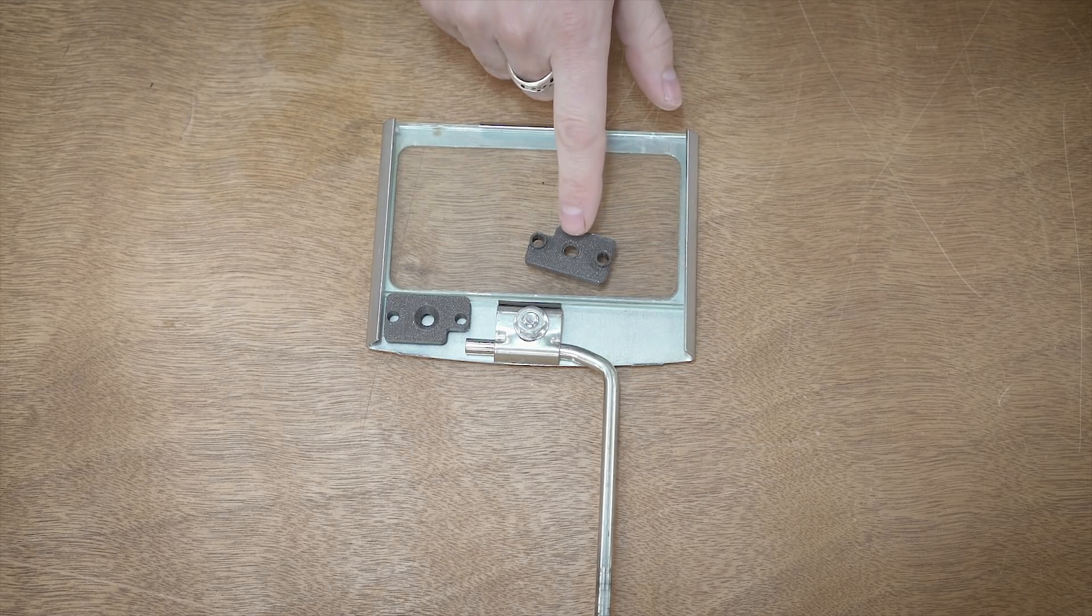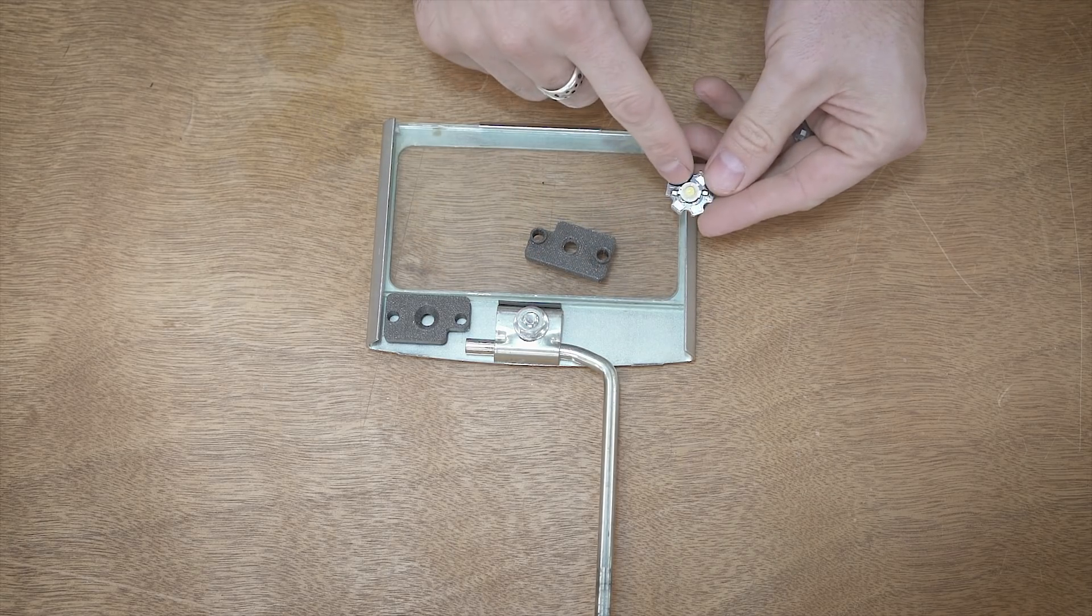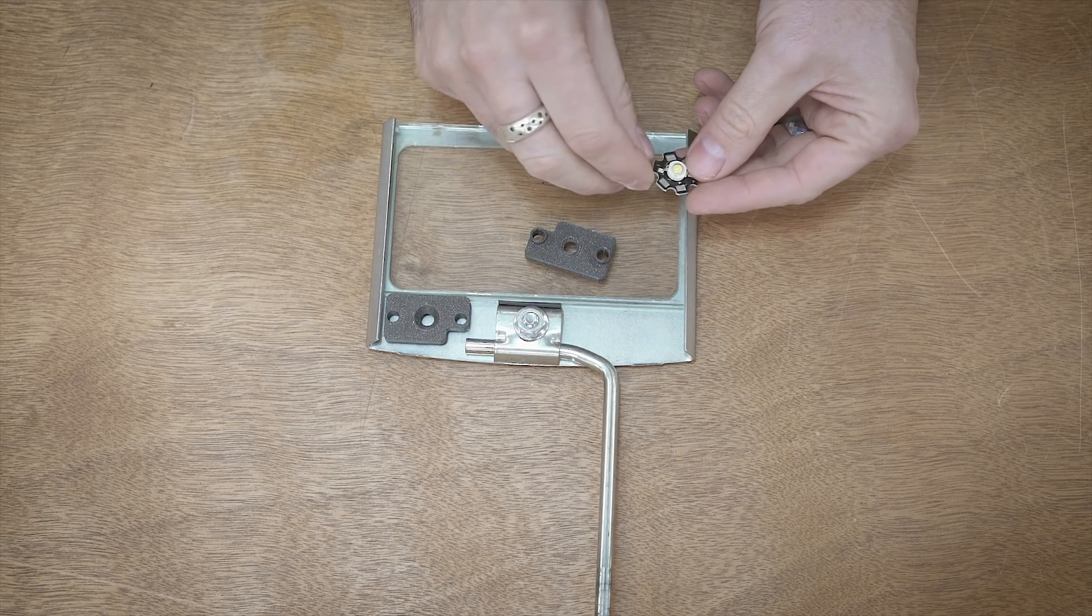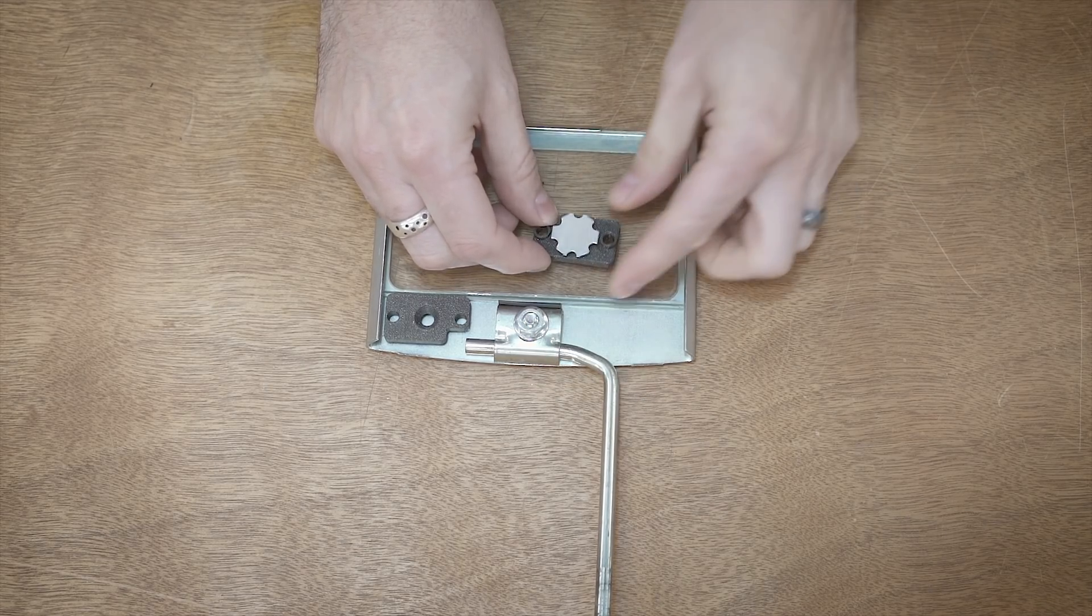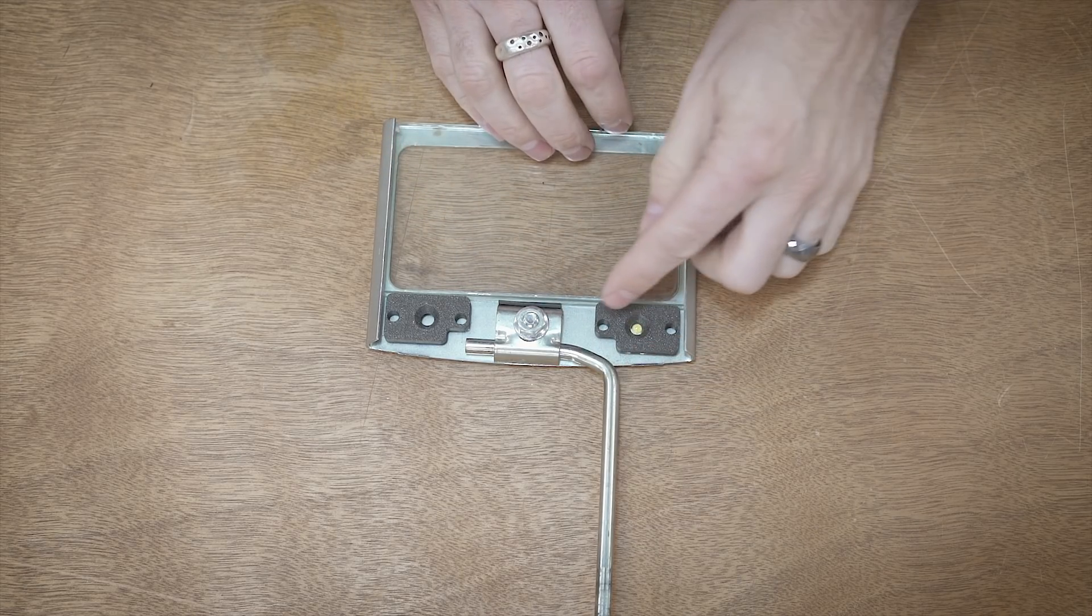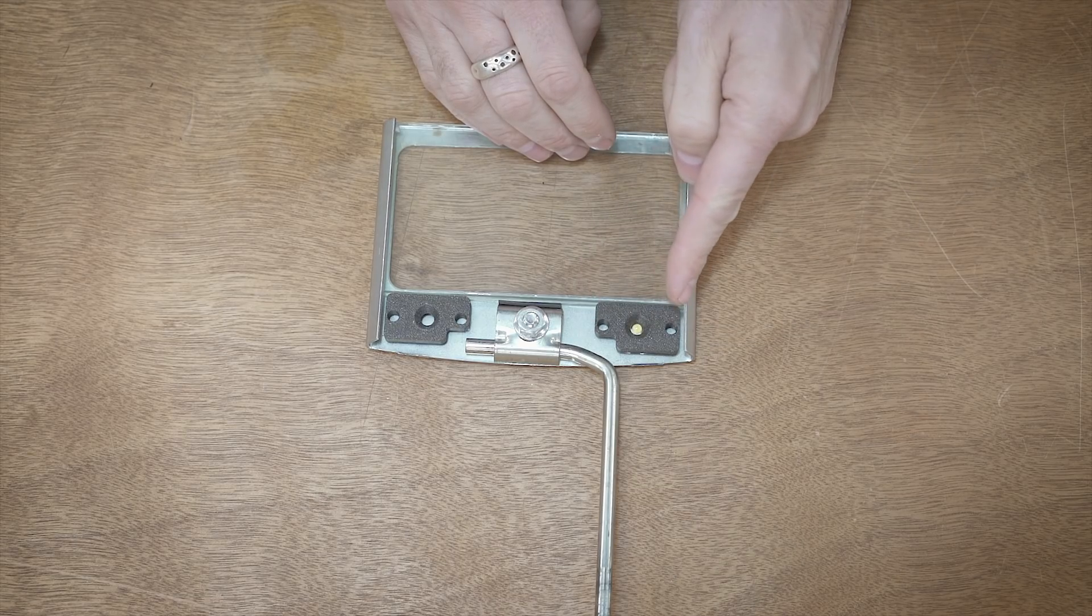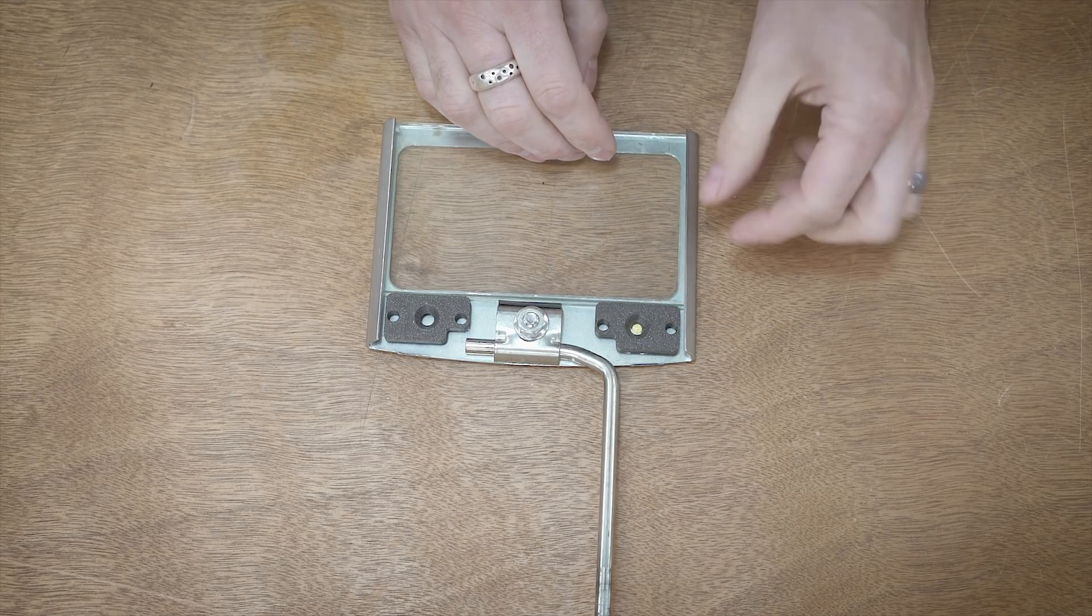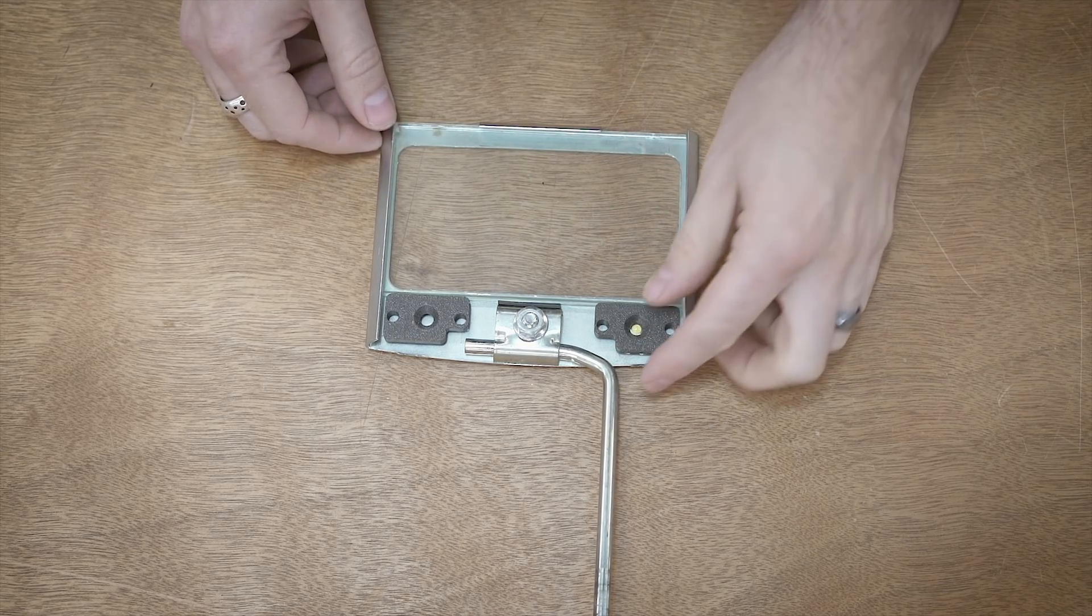The way these work is it has this little recess here that corresponds with the little lip on the lens. If I line it up like that, it should just snap into place. Then we just have to drill two holes, and I'm going to be using brass heat set inserts on the 3D print.